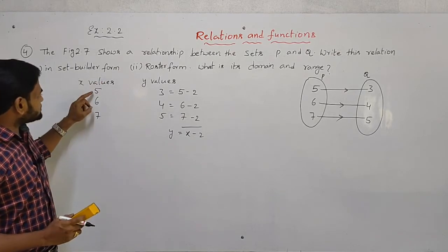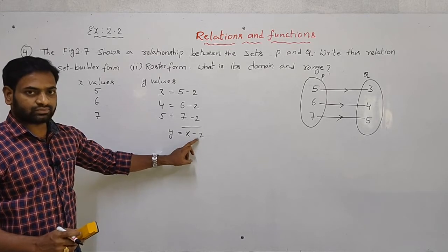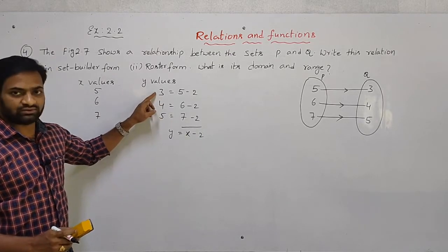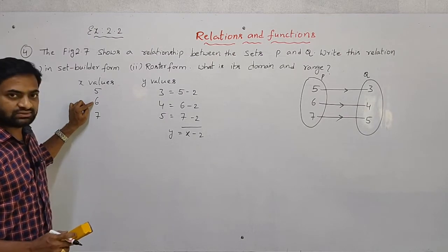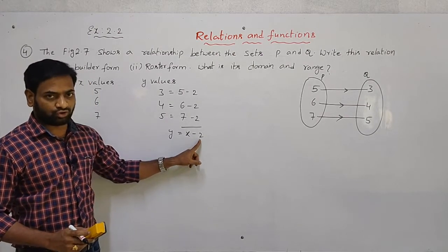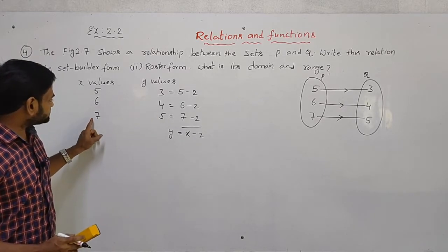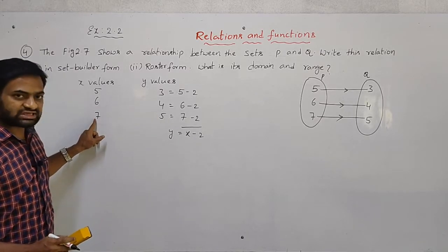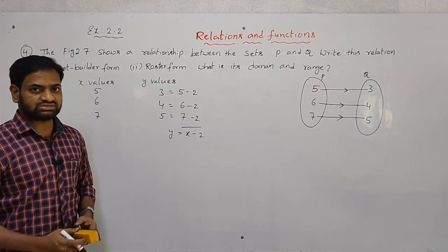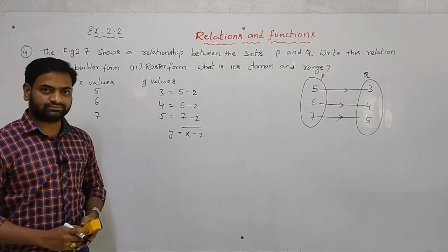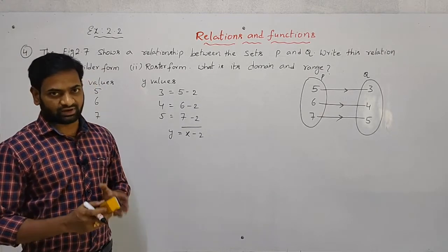To verify: if x = 5, then 5 minus 2 equals 3, which is the first y value. If x = 6, then 6 minus 2 equals 4, so y = 4. If x = 7, then 7 minus 2 equals 5, which is the y value. So that confirms the relation between x values and y values.